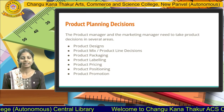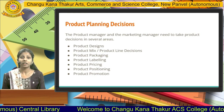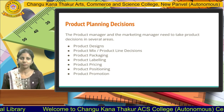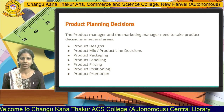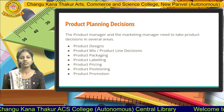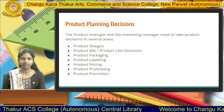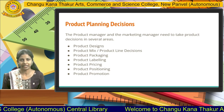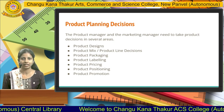For example, product design — what is the design of the product, what is the need of the product, and how it has been designed and transmitted. That is product design. Then we have product mix. There are 7 P's in the marketing strategy: product, price, place, promotion, packaging, and all.